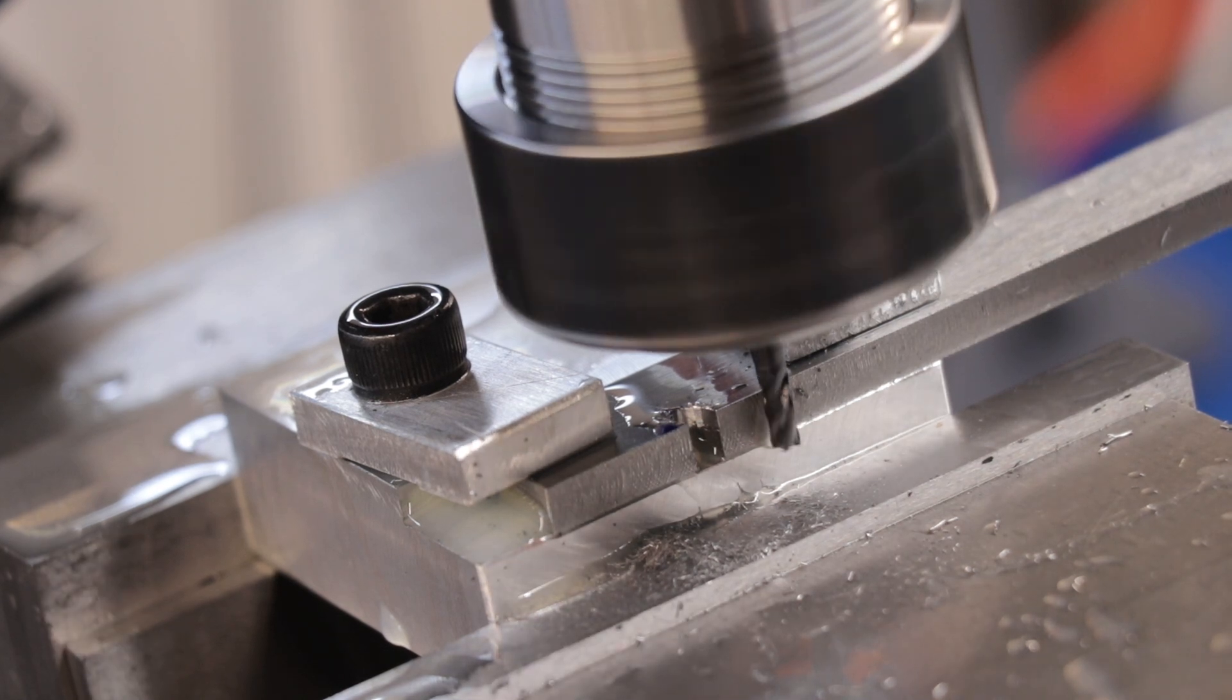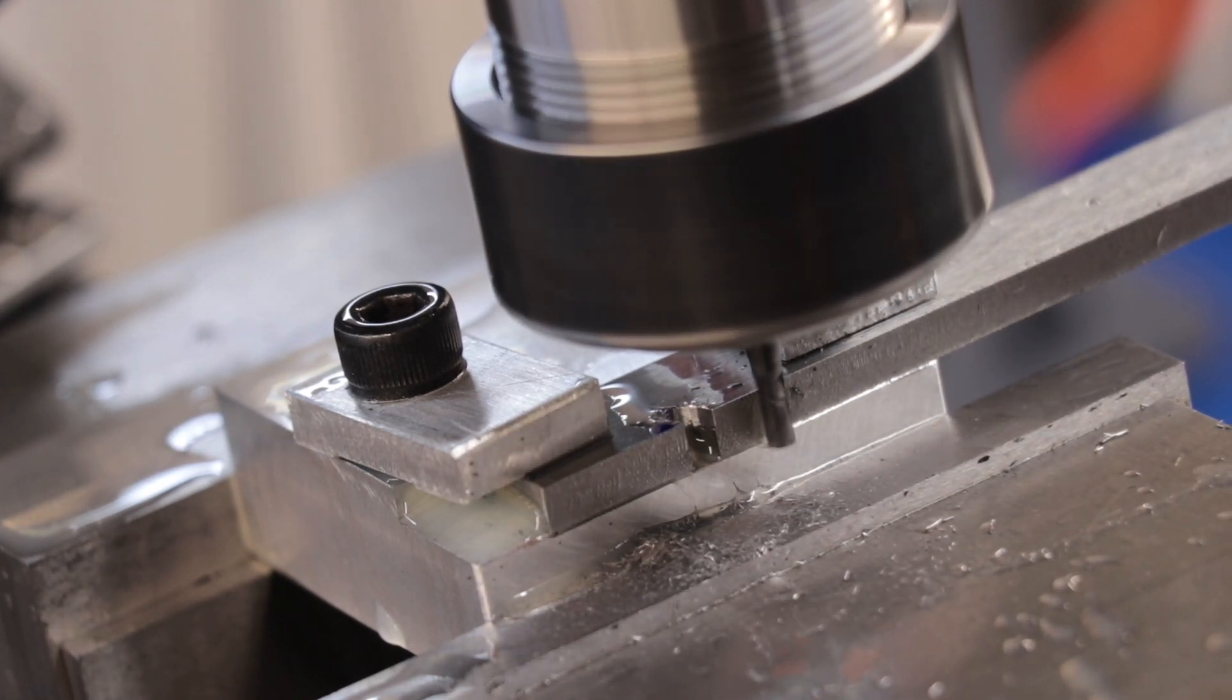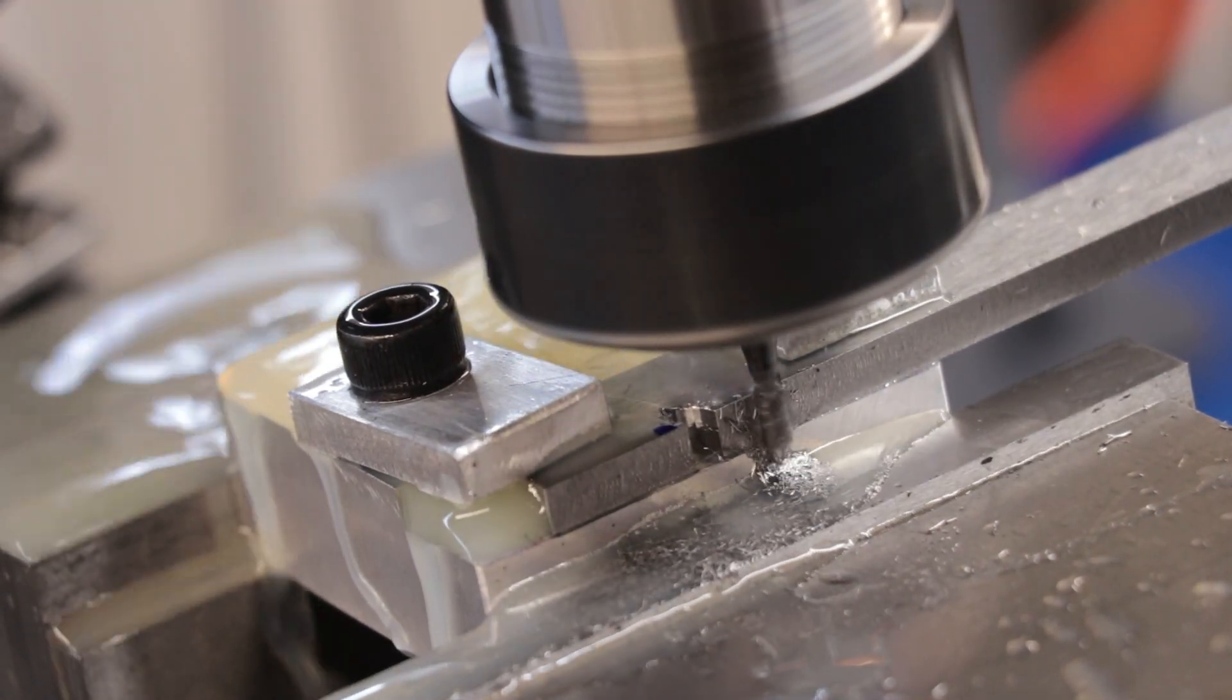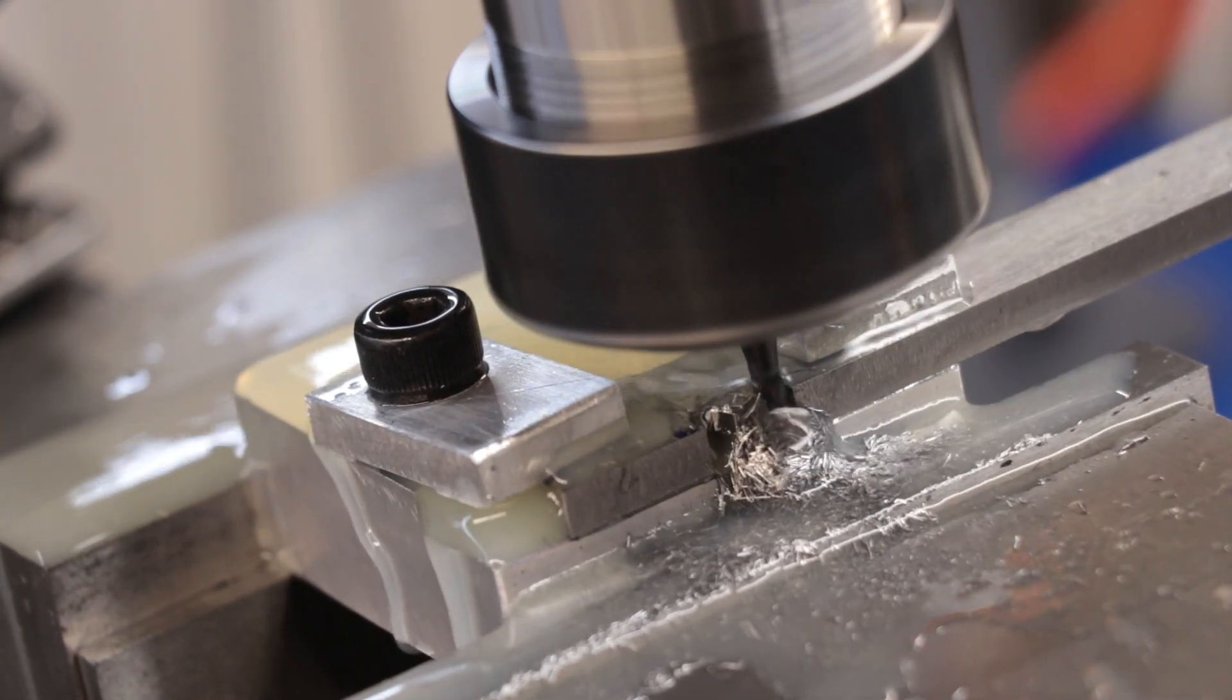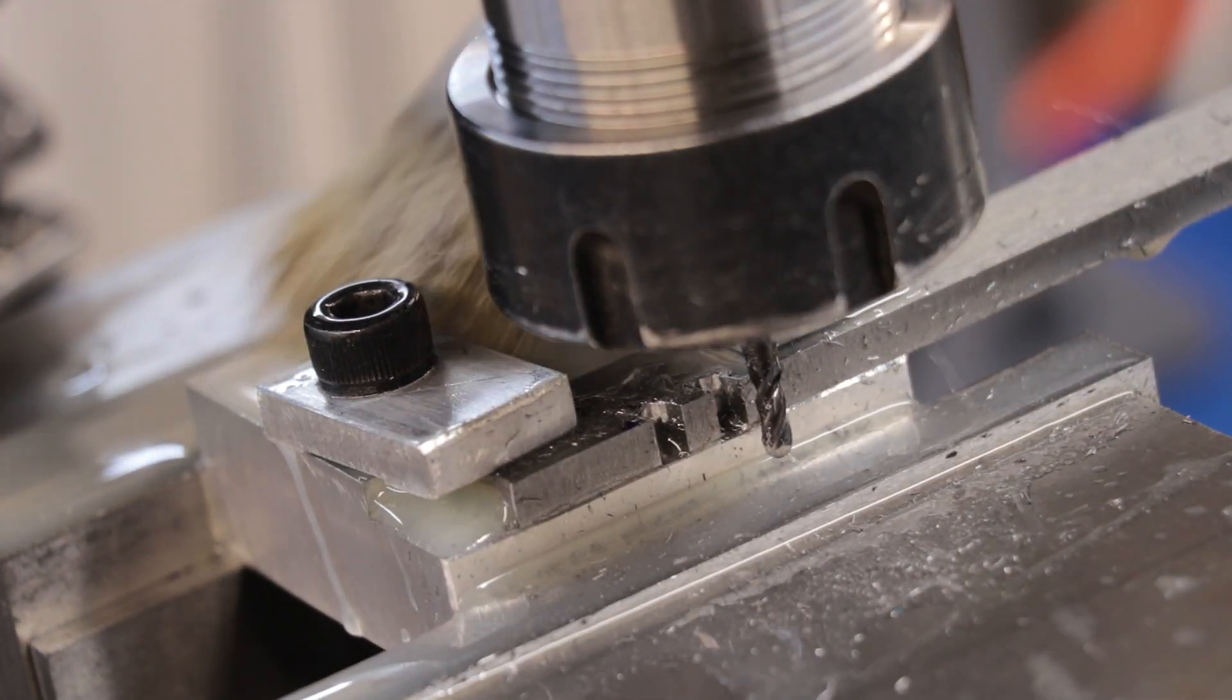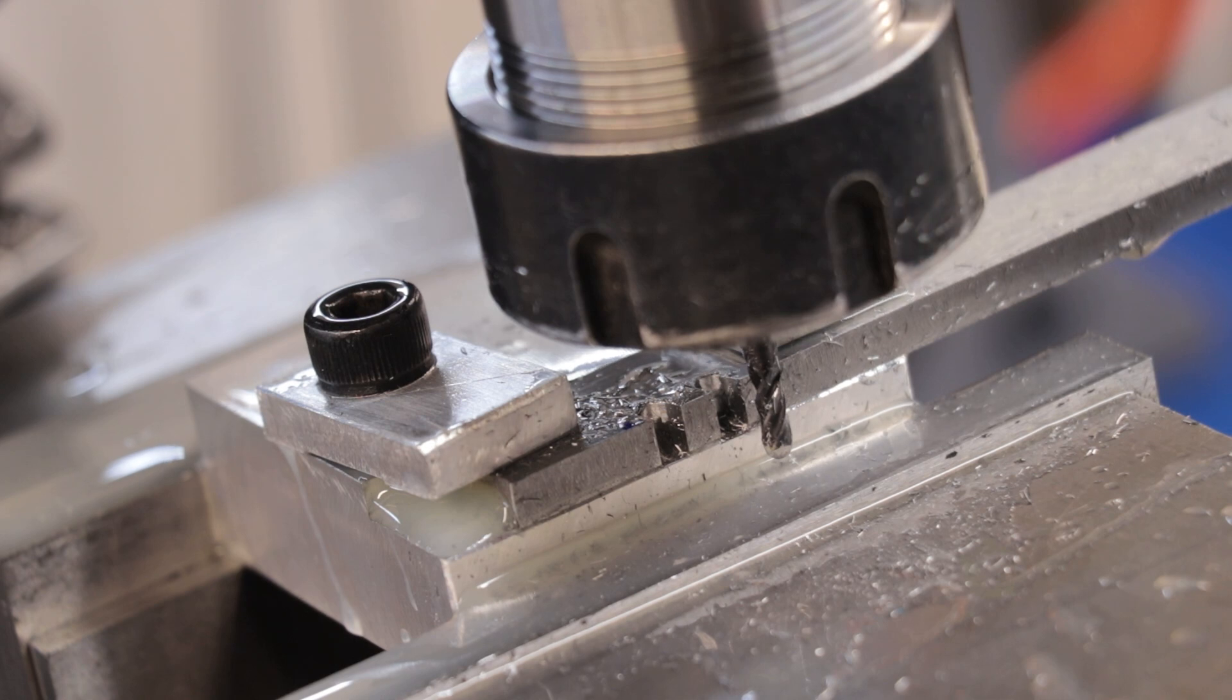With the first tooth now formed I'll move over leaving about 4mm for the tooth itself and then I'll make a second cut. With the two teeth now formed this will now be the final spacing for all of the teeth in the broach.